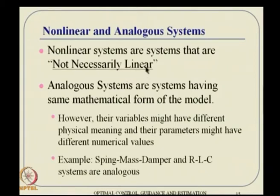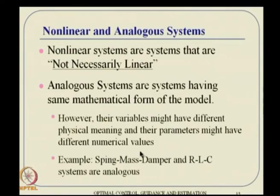There are concepts called analogous systems — systems for which the mathematical representations are similar but their physical meanings are different. For example, a spring-mass-damper system in mechanics is very equivalent to an RLC circuit in electrical systems. These two systems are considered analogous — the math theory is very similar, but the physical interpretation differs.